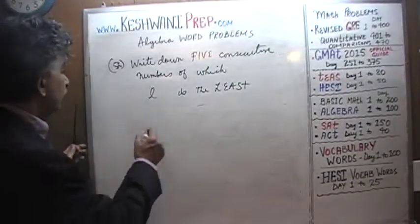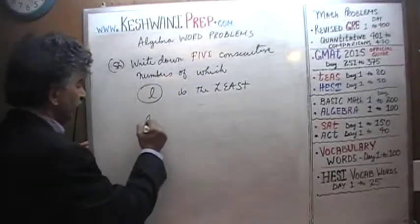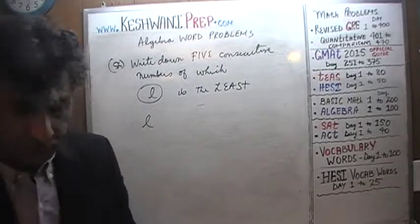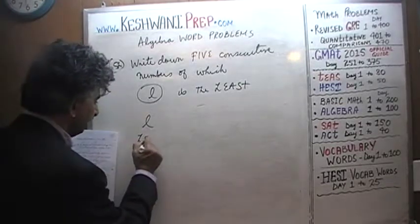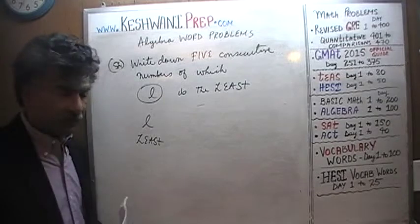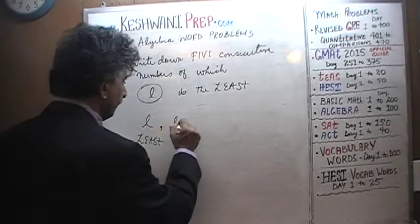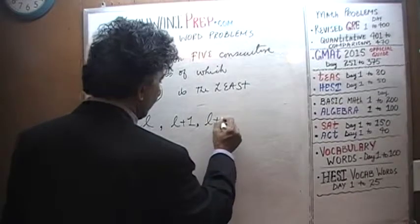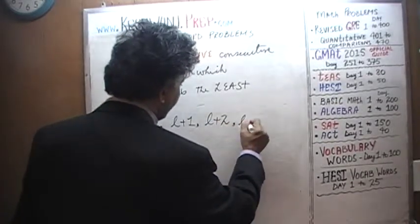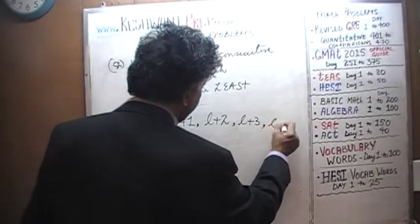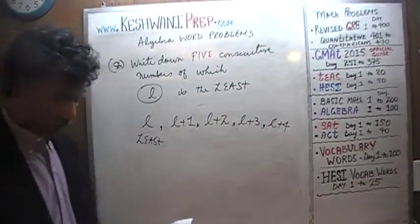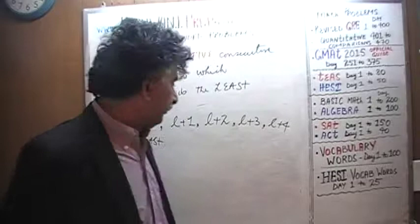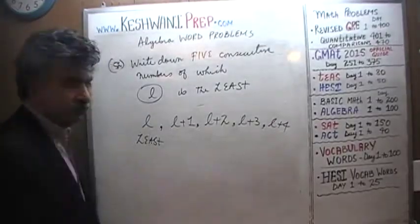If the smallest of them is L, then the next one is going to be one more than that. And the one after that is going to be one more than that one — L plus 1 plus 1 is L plus 2. One after that is L plus 3, and finally L plus 4. We have just expressed 5 consecutive numbers from least to greatest: L, L+1, L+2, L+3, L+4.